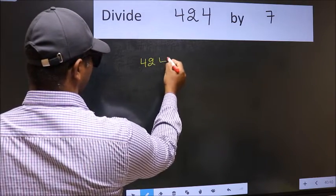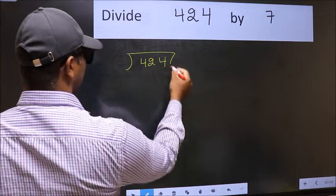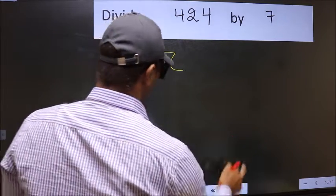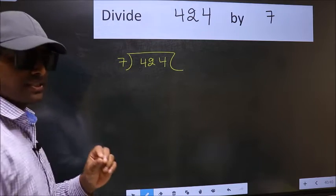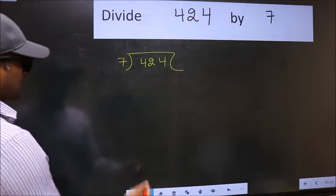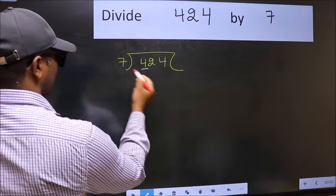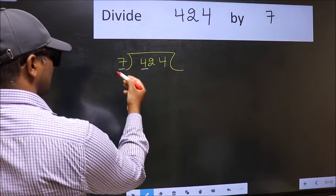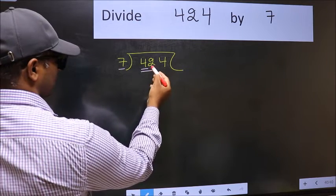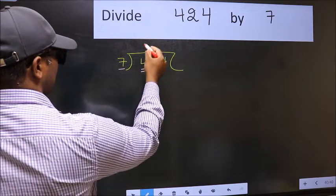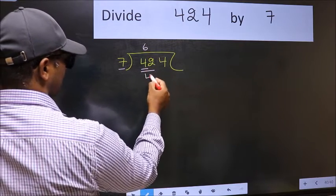424 and 7 here. This is your step 1. Next, here we have 4 and here 7. 4 is smaller than 7, so we should take two numbers, 42. When do we get 42 in the 7 table? 7 times 6 equals 42.